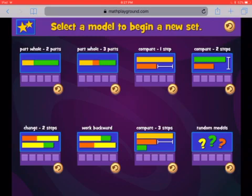I need to select which model to begin. There's part-whole or part-part-whole with two parts, there's part-part-part-whole with three parts, there's comparison ones, changing things or working backwards. We are going to do the part-part-whole with only the two parts for now.